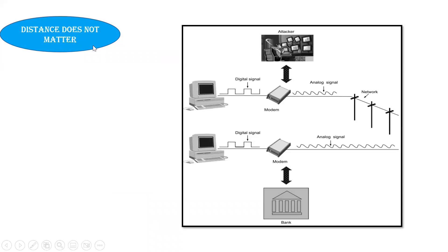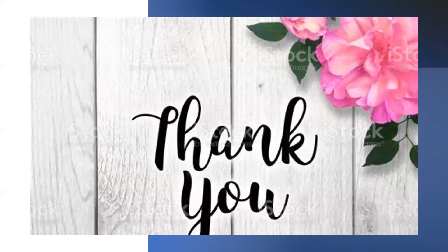Distance does not matter in modern attacks. In the past, to rob a bank you had to go in person. Now, an attacker can sit at one end and digitally see what is happening inside a bank server. If the attacker gains access to the bank server through a network modem or computer system, they can take all the data without ever going to the bank physically. Everything is digitalized now, so digitally the attacker sits at one point, hacks into the developer software, enters the server, crashes it, and takes all the data. Stay tuned for more information, thank you.